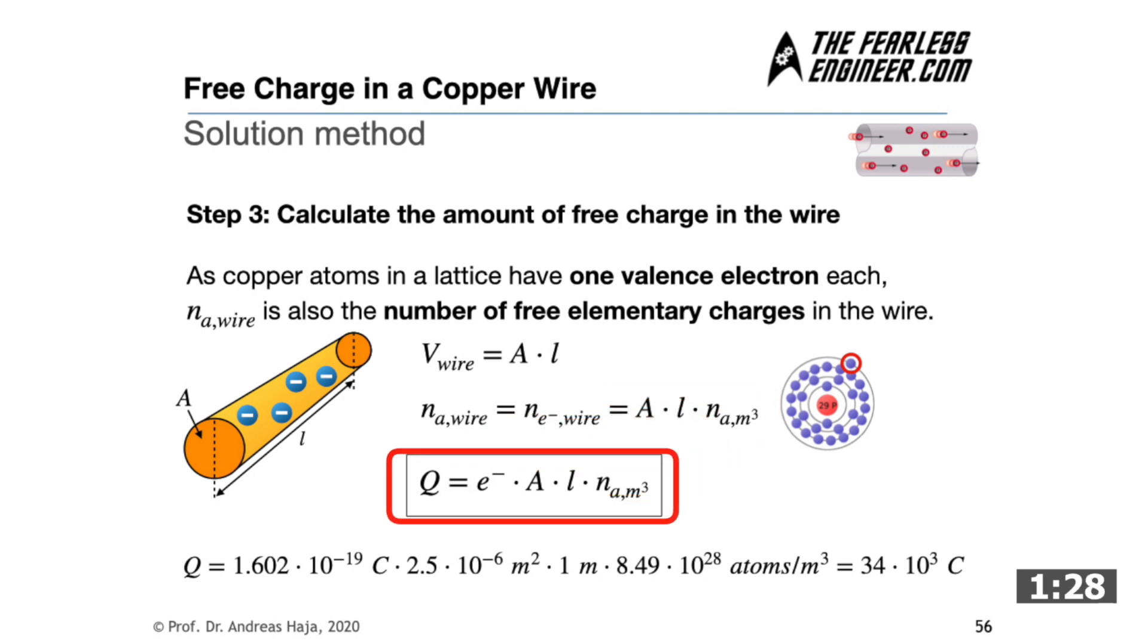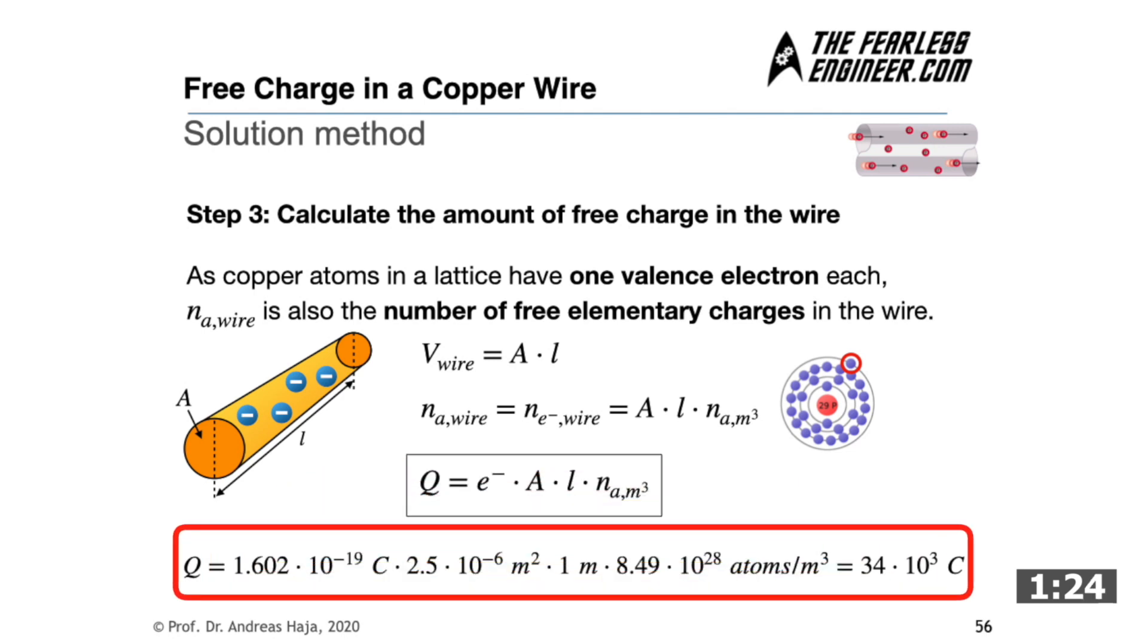And if we now plug in the numerical values given in the example into our equation, we get Q the charge equals 1.602 times 10 to the power of minus 19 Coulomb, multiply it with 2.5 times 10 to the power of minus 6 square meters, multiplied with 1 meter, multiplied with 8.49 times 10 to the power of 28 meters to the power of minus 3. And this equals to 34 times 10 to the power of 3 Coulomb and thus to the amount of charge that is distributed throughout the conductor in the form of freely moving electrons.